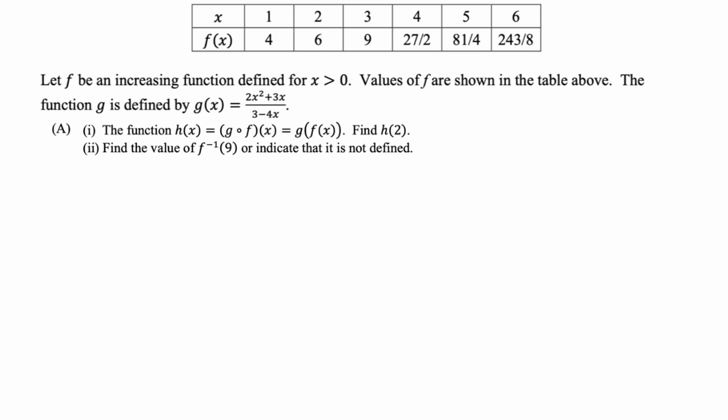All right, for the first part, we have let f be an increasing function defined for x greater than zero. Values of f are shown in the table above. The function g is defined by g of x equals 2x squared plus 3x over 3 minus 4x. So what's going to happen in this FRQ every year, basically, is you're going to be given two functions, two representations, like a table and a function or a graph of a function, some combination of the two. And then you'll be asked largely the same questions.